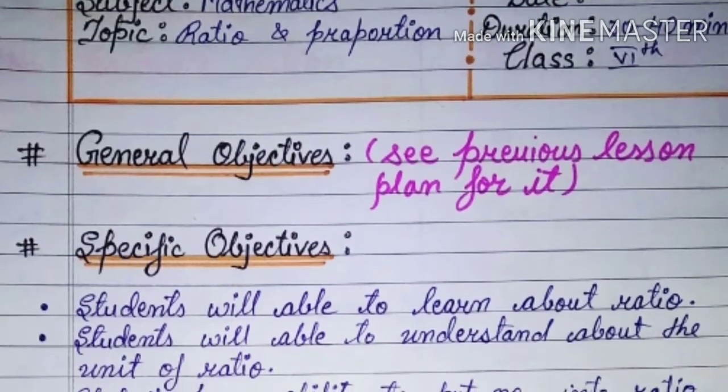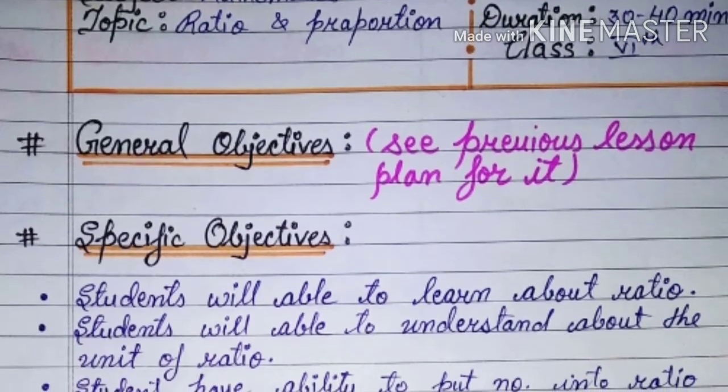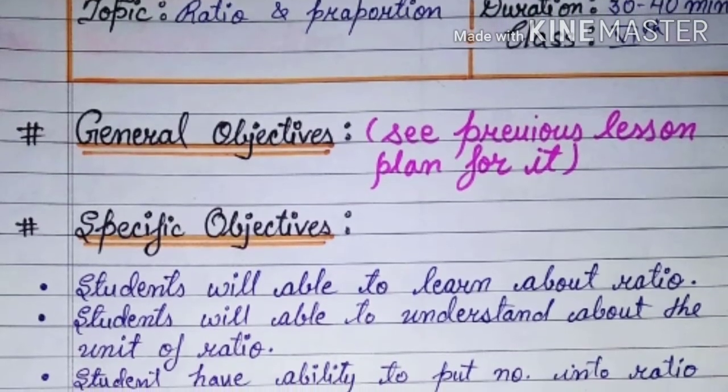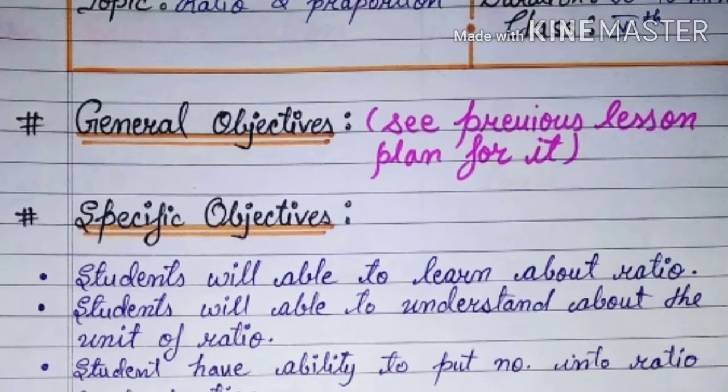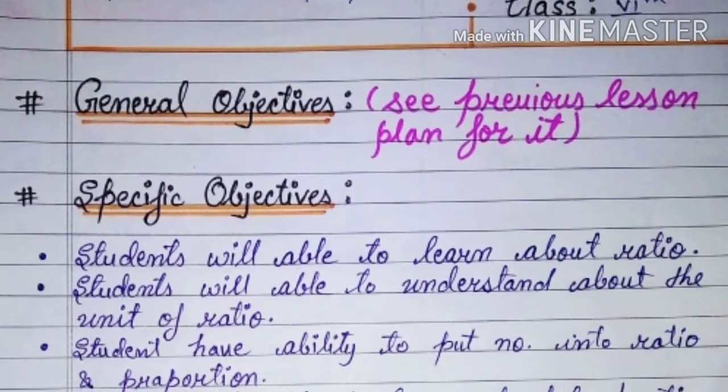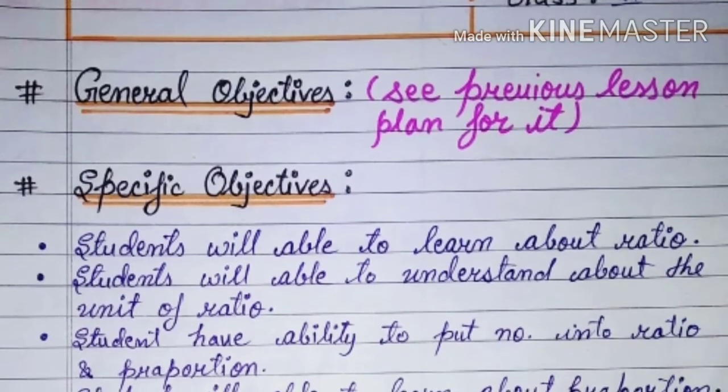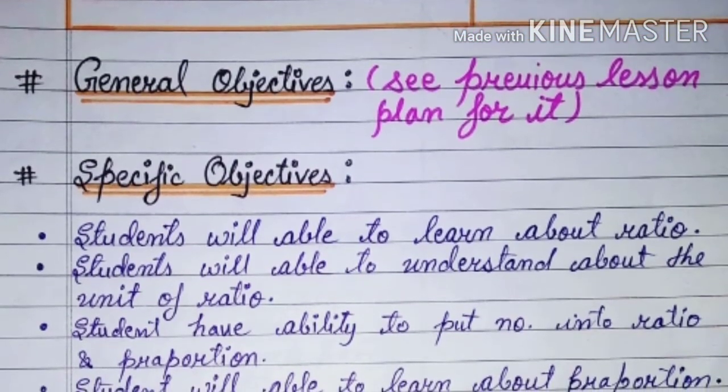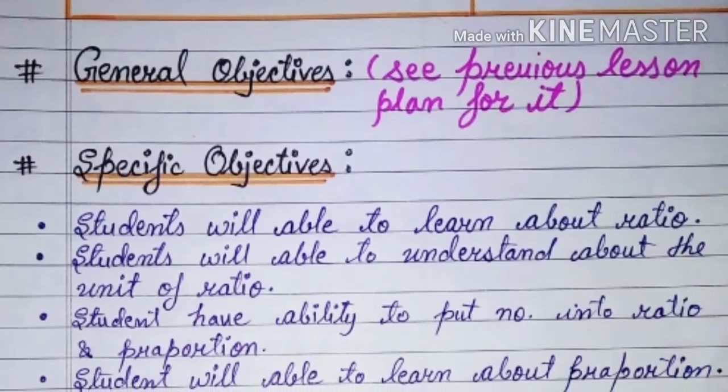After the general objective, we have some specific objectives. First, students will be able to learn about ratio. They will be able to understand about the unit of ratio. It will not be the unit of ratio, but they will be able to tell you.